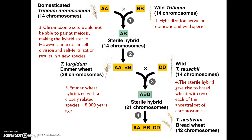This is an example of polyploidy in plants, which I mentioned in the last lecture segment. It basically tracks the advent of modern bread wheat, which has 42 chromosomes. In the past we had a domesticated Triticum species — Triticum is the genus name for wheat — with 14 chromosomes. It was crossed with a wild Triticum species, which also had 14 chromosomes. The offspring represents hybridization, but this particular cross was not successful because the species were different enough that the offspring are sterile. The chromosome sets were not able to pair successfully at meiosis, making the hybrid sterile.